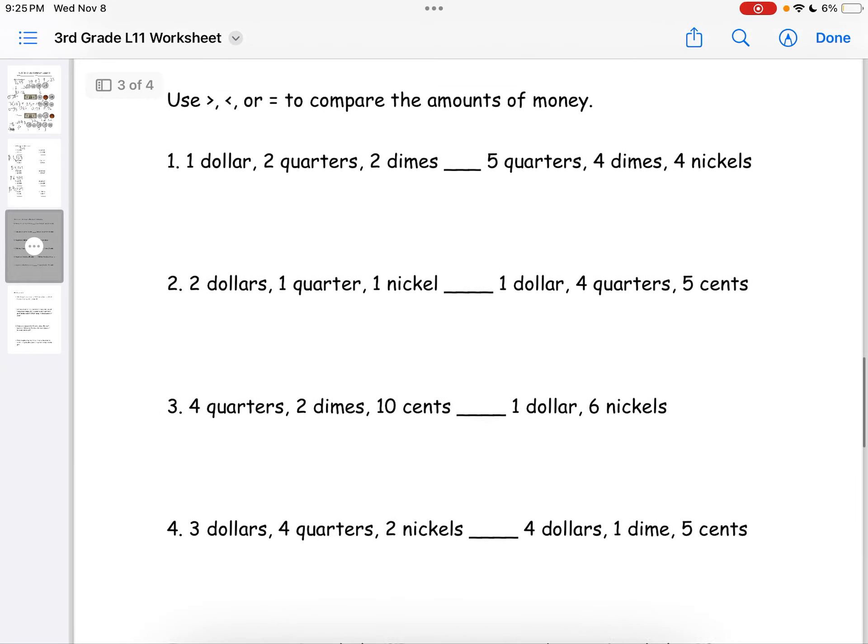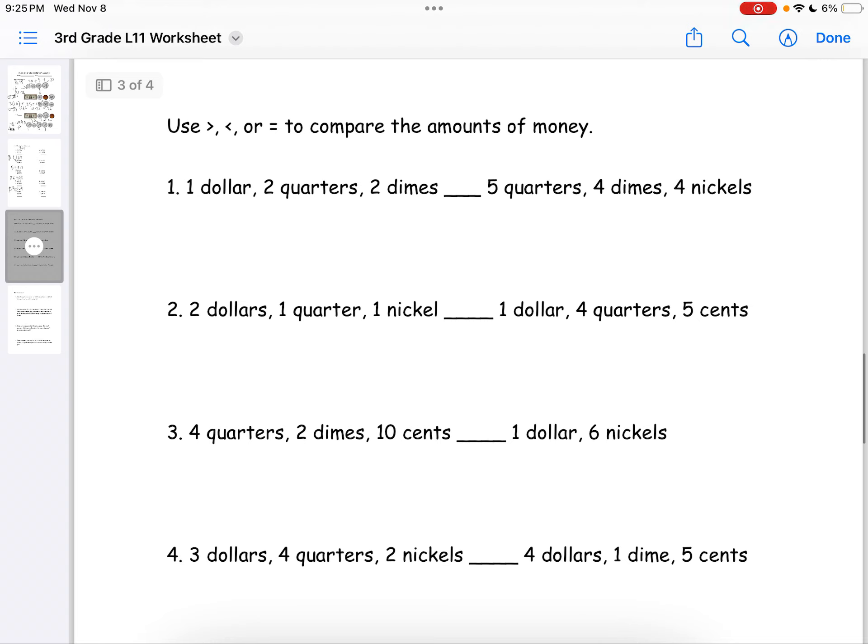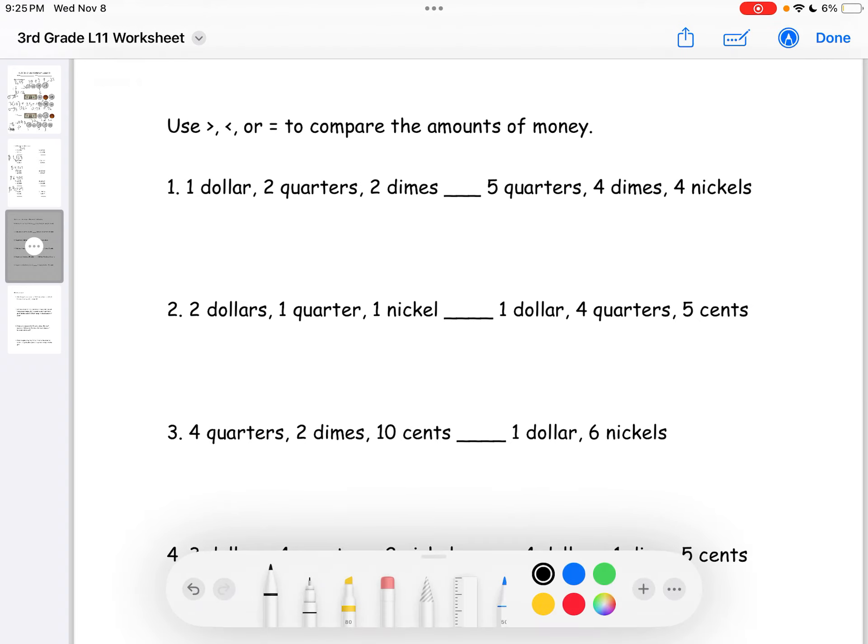So, we'll move on to the third page which says use these symbols to compare the amounts of money. So, the left side has $1 and then 2 quarters equals $0.50 and 2 dimes equals $0.20. So, it'll be $1.70 on the left side.